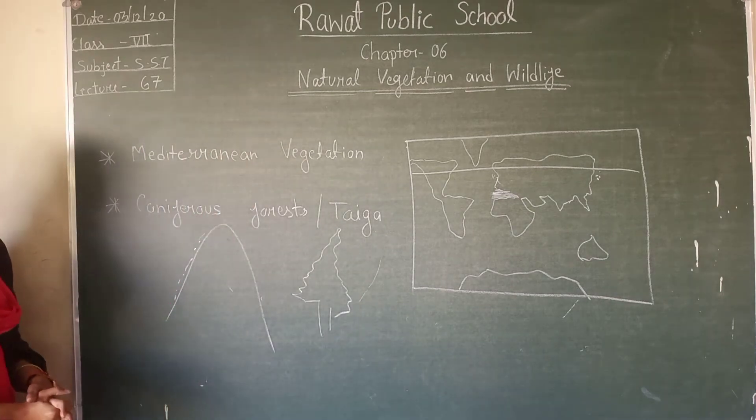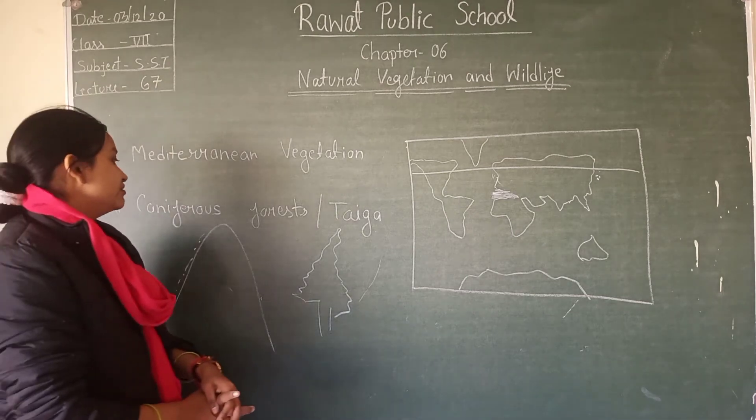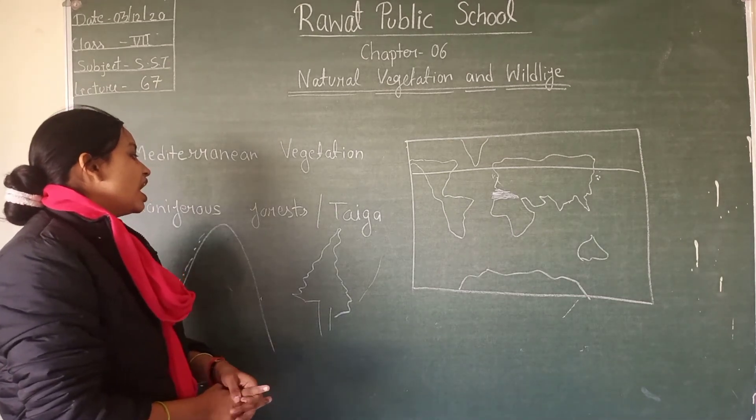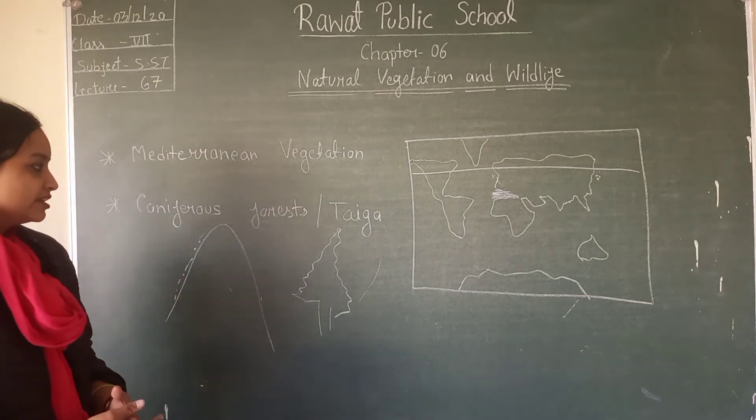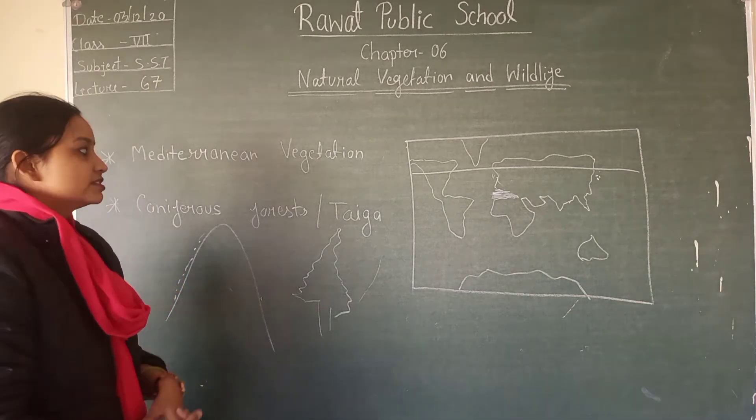In this class, we have covered two types of vegetation: Mediterranean vegetation and coniferous forest.